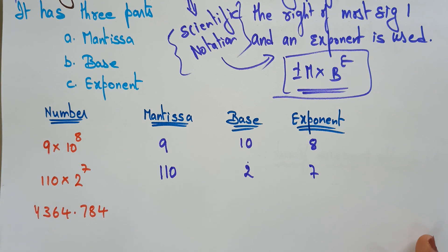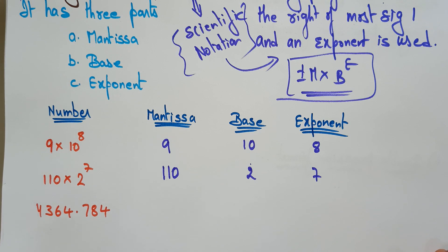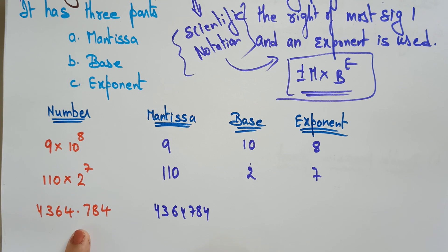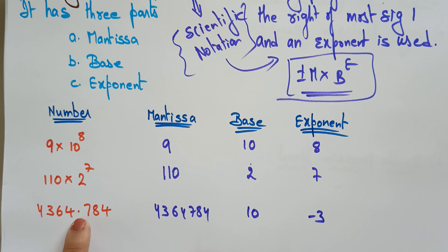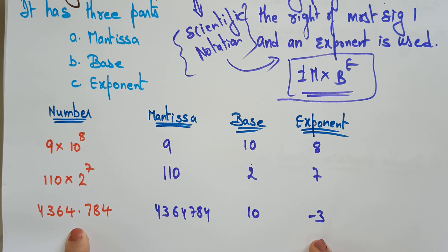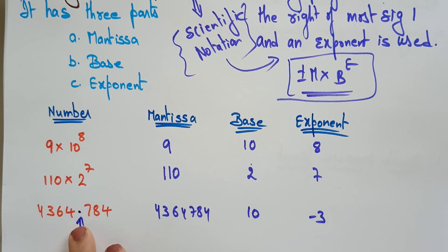If you take a decimal fraction, it can also be represented in this format. The mantissa is the complete number, the base is 10, and the exponent is minus 3, because I shifted the dot. Whenever you move the decimal or binary point, you get the exponent — so 4.3647840 into 10 power minus 3 is nothing but that value. The binary point can float; it floats to the right of the most significant one, and an exponent is used.